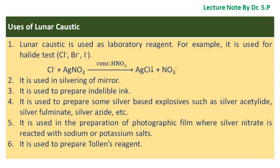Uses of lunar caustic: it is used as a laboratory reagent, for example in halide tests such as chloride, bromide, and iodide. It is used in the silvering of mirrors and to prepare indelible ink. It is used to prepare silver-based explosives such as silver acetylide, silver fulminate, and silver azide. It is used in the preparation of photographic film, where silver nitrate is reacted with sodium or potassium salts. It is also used to prepare Tollens' reagent.